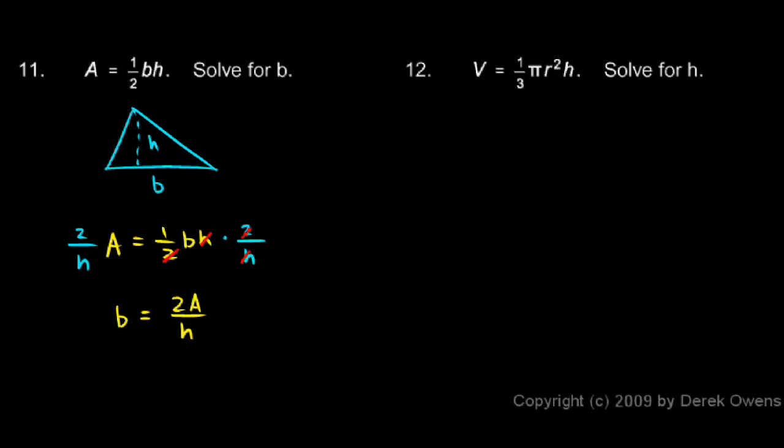In number 12, I have the formula v equals 1 third pi r squared h, and I'm told to solve that for h. This is the formula for the volume of a cone.